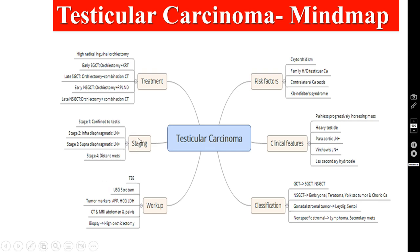Coming to staging — there are four stages. Stage 1: the tumor is confined to the testis. Stage 2: it is extra-testicular, but only infra-diaphragmatic lymph nodes are involved. Stage 3: even the supra-diaphragmatic lymph nodes are involved. Stage 4: there is distant metastasis to distant organs like bone, etc.